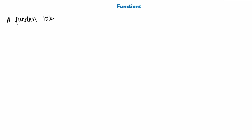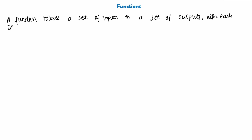The formal definition we're going to look at today is that a function relates a set of inputs — we talked about sets in our last video, so be sure to go and look that up — to a set of outputs, with each input related to exactly one output.